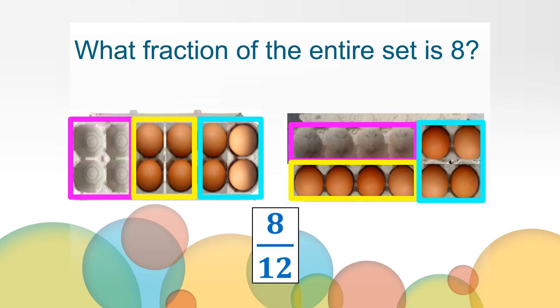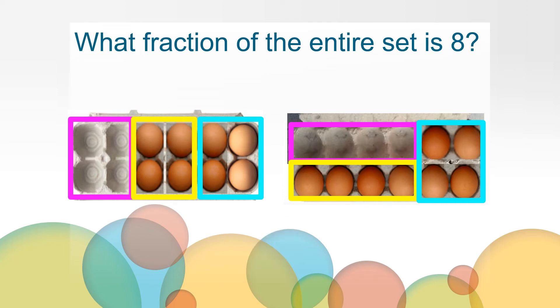Can you see another way to name the eight remaining eggs as a fraction? Since there are three groups of four to make up our whole, we call them thirds. Each group of four is one third.